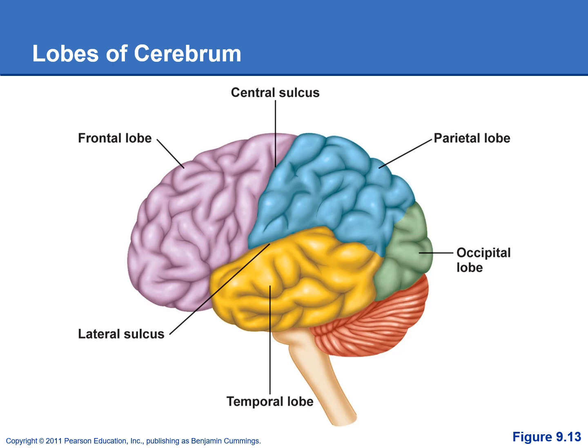The occipital lobe at the very back is where vision comes in — all the information from your eyes goes to the back, to the occipital lobe. The temporal lobe is by your temples, right above your ears. Hearing goes to your temporal lobe, and smell also goes to the temporal lobe.